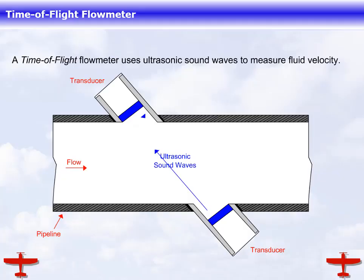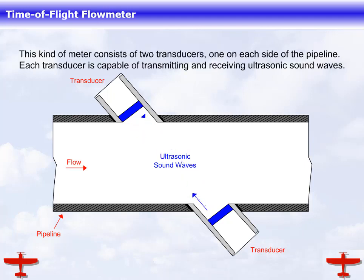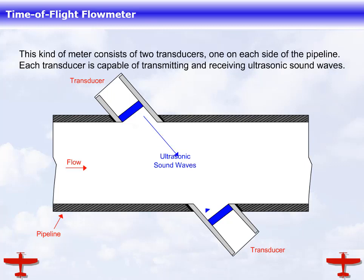Welcome to the time-of-flight flow meter. A time-of-flight flow meter uses ultrasonic sound waves to measure fluid velocity. This kind of meter consists of two transducers, one on each side of the pipeline. Each transducer is capable of transmitting and receiving ultrasonic sound waves.